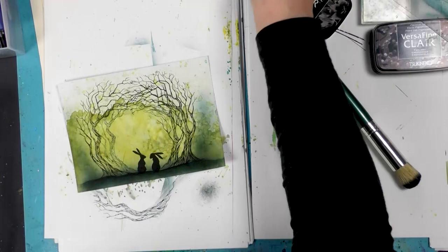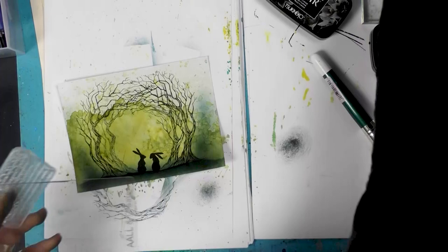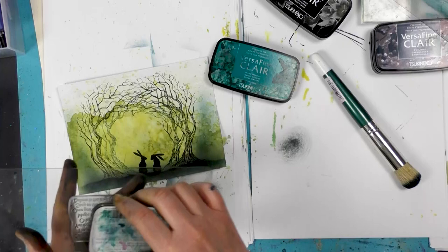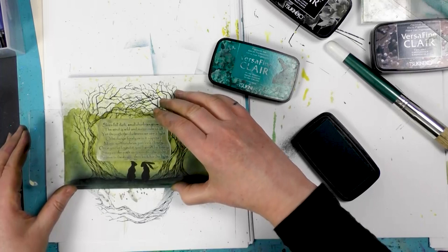So now taking the worded stamp, I'm going to ink this up in warm breeze and then I'm going to pop that down in the middle there.